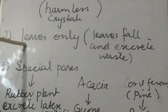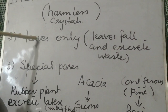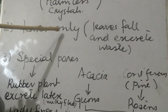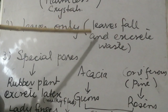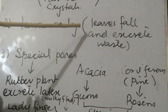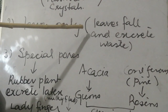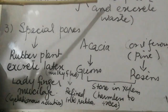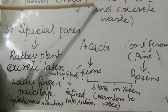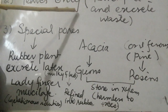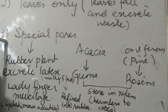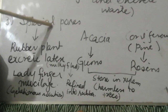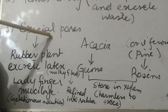Second, some plants store waste in the leaves only. The benefit of storing waste in the leaves is that when the leaves fall from the body of the plant, the plant gets rid of this waste. So the falling of leaves is a process of elimination of organic waste from the plant.